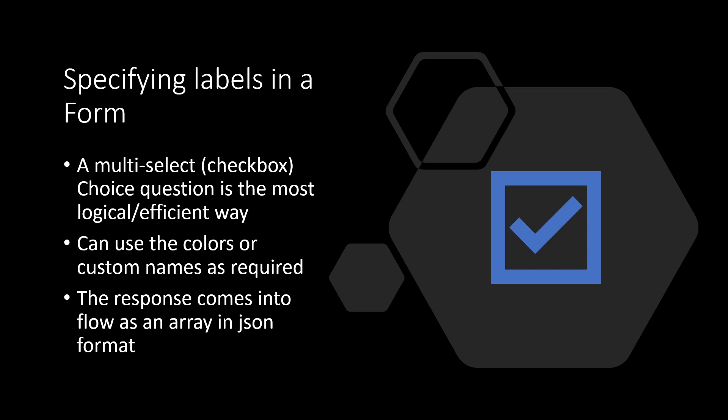In terms of specifying labels on a form, whenever you want to give people multiple selections from a list, a multi-select choice question is really the most efficient way to do that. I tried a Likert scale and a text field, and the choice question is the cleanest approach. You can use the colors as the choice values to keep things simple. It's important to note that when you use that multi-select choice question, the data that comes into the flow is a JSON array.